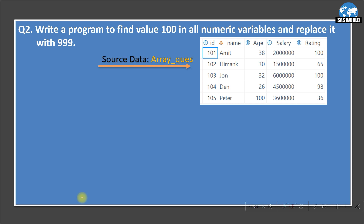The second question: write a program to find value 100 in all numeric variables and replace it with 999. This is similar to the previous one but now with numeric variables. The dataset has ID, age, salary, and rating as numeric variables. Wherever a value of 100 appears in any of these numeric variables, it should be replaced with 999.